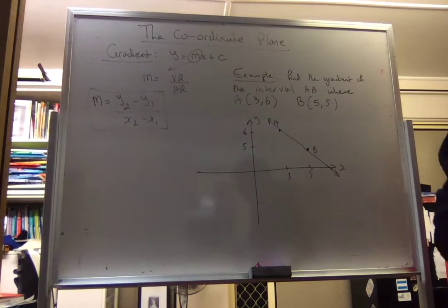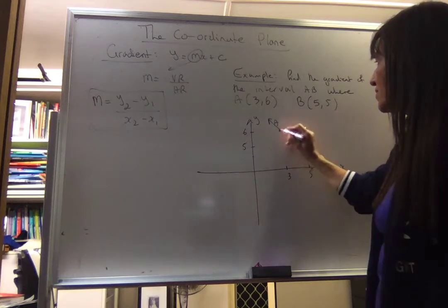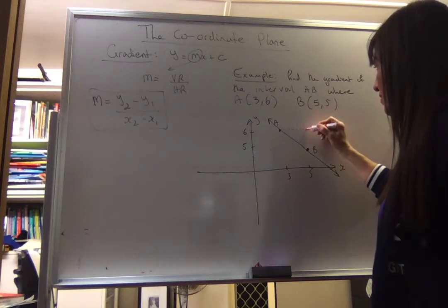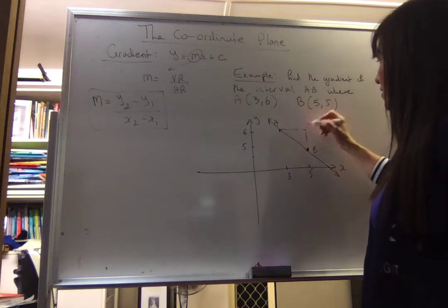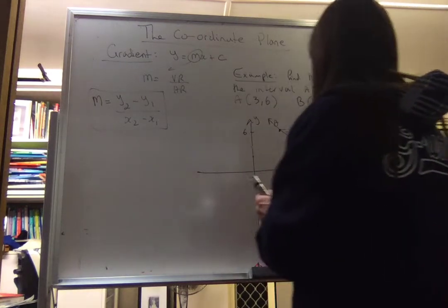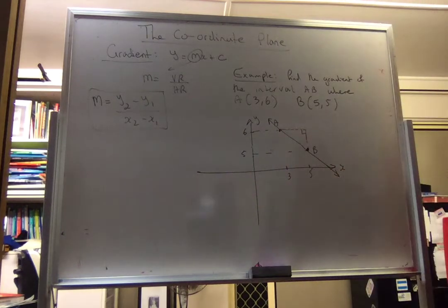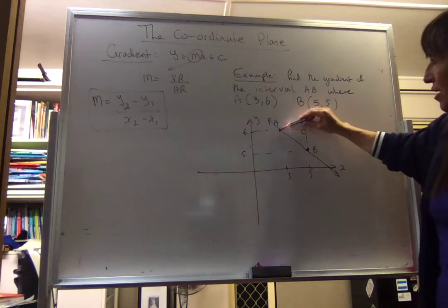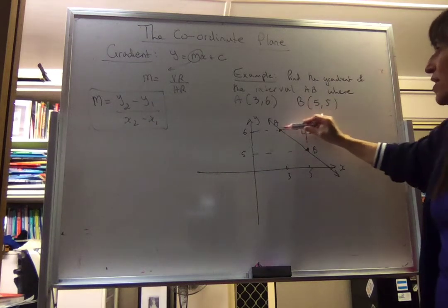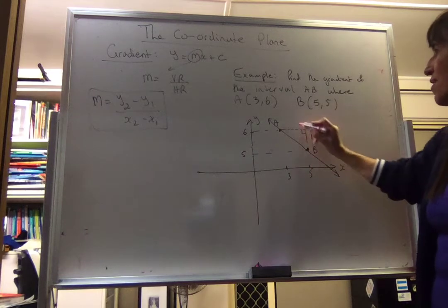Now, if I were to draw a right angle triangle and make that part of the interval AB the hypotenuse — so this is (3,6) here and 5 over there. If I draw a right angle triangle, here's my right angle triangle, and I want to find the gradient of this line, the steepness. If I look at the distance between 5 and 6, that's just 1 unit, and the distance between 3 and 5, well, that's 2 units.